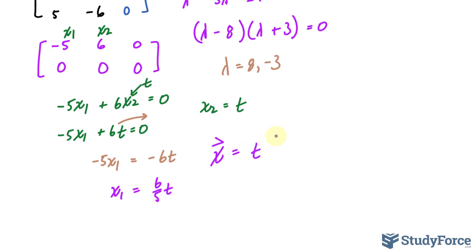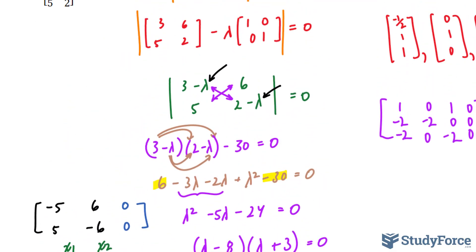I can represent my solution as a column vector, which I'll call x, is equal to t times, over here, for x sub 1, we had 6 over 5. And over here, the leading coefficient was 1 for x sub 2, so I'll write down 1. This matrix right here represents one of my eigenvectors. Now remember, we had two solutions. We had 8 and negative 3. So rather than place 8 into here and into there, I'll be placing negative 3.